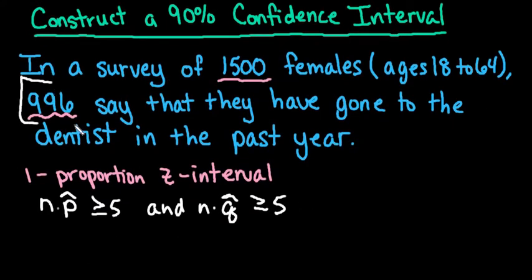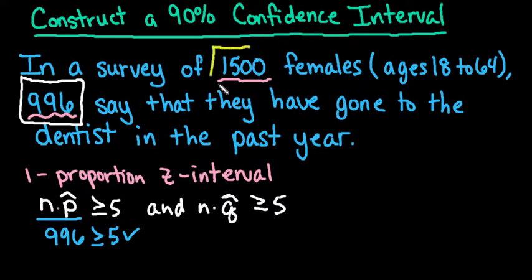If we look at this right here, 996 would be our n times p-hat. So we can say that 996 successes is definitely greater than or equal to 5. And our number of failures is found by taking our total minus the 996, which gives us 504 failures. So since both our successes and our failures are greater than or equal to 5, the central limit theorem kicks in and we can use the normal distribution to model this situation.